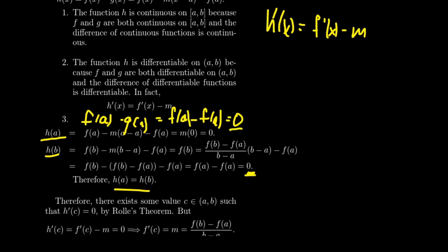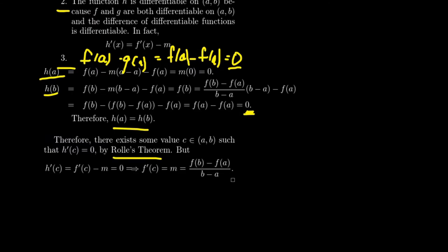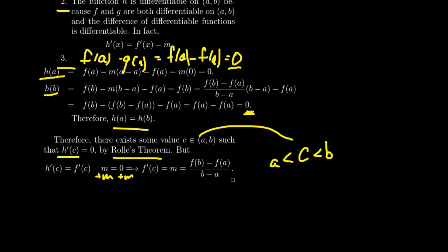Notice that h is continuous on the closed interval, differentiable on the open interval, and h of a equals h of b — it satisfies all three assumptions of Rolle's theorem. So Rolle's theorem implies that h prime of c equals zero for some value c between a and b. Since h prime of c equals f prime of c minus m, adding m to both sides gives f prime of c equals m, which is exactly f of b minus f of a over b minus a. So we proved the mean value theorem using Rolle's theorem.